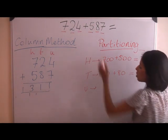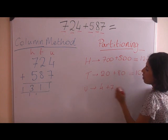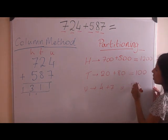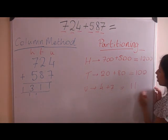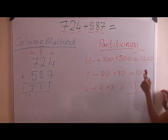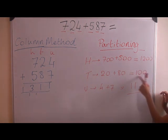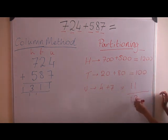How many units? 4 and 7, which gives us 11. If we add up those amounts: 1200, then 1300, then 1311.